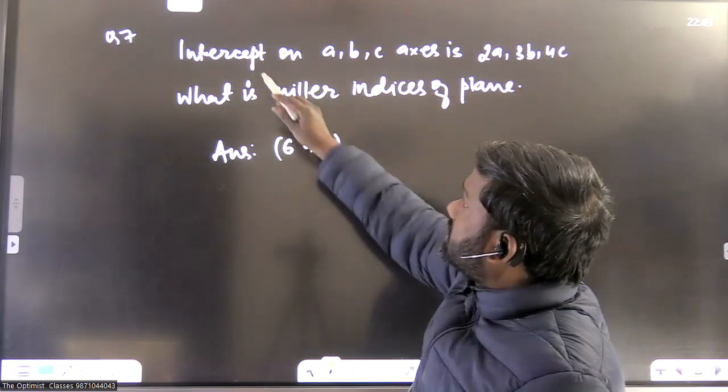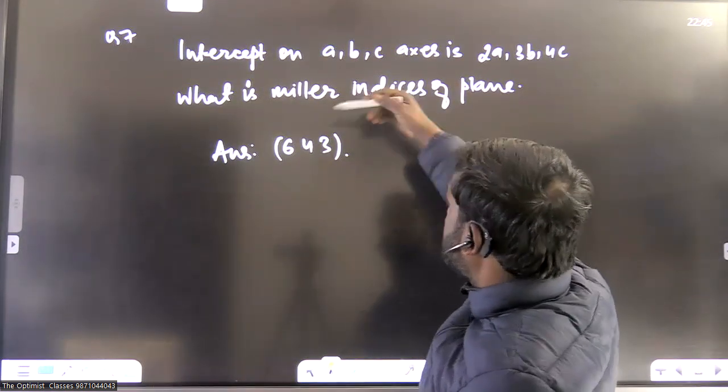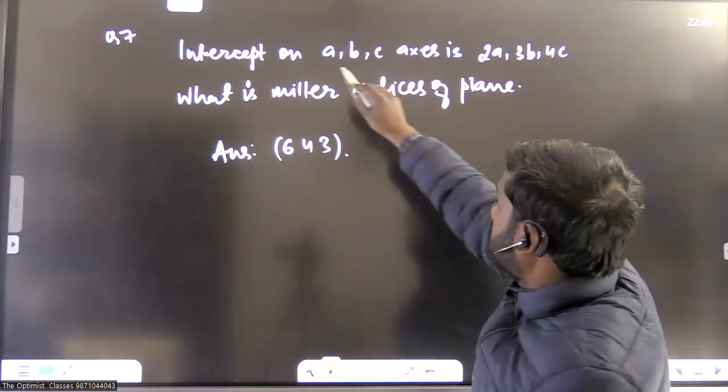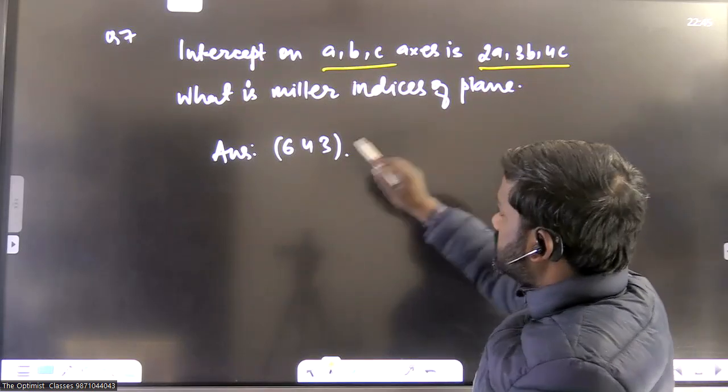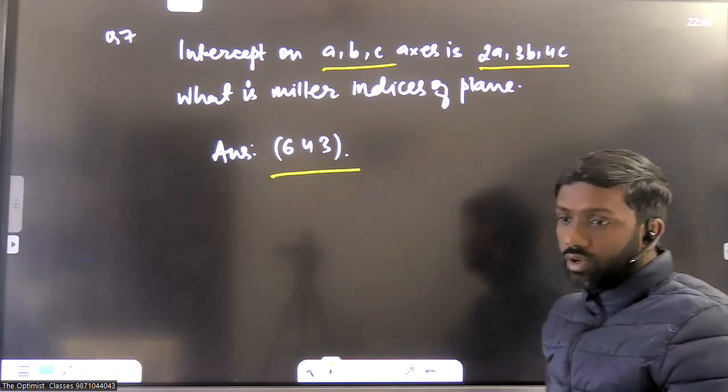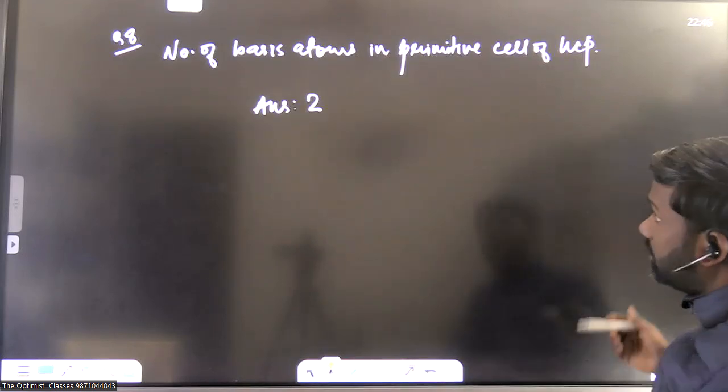Now, it says there is a plane whose intercept on these ABC axis are 2a, 3b and 4c. So what is the Miller indices? Answer will be 643. You can calculate by applying the method.